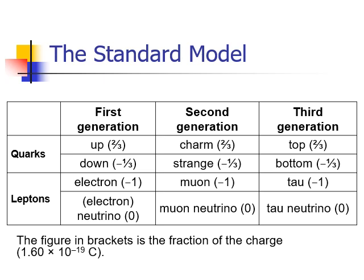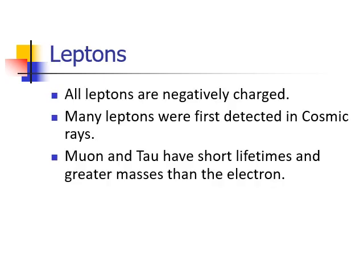The up and the down are two thirds and minus a third. Then we have the second generation: charm, strange, muon, and the muon neutrino. And the third generation: top, bottom, tau, and tau neutrino.